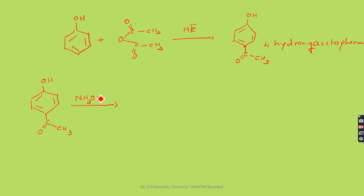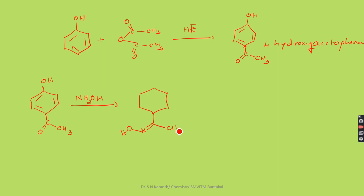The ketone, 4-hydroxyacetophenone, reacts with hydroxyl amine, producing a ketoxime. The ketoxime contains an N-OH group linked to the carbon, and this type of compound is produced.